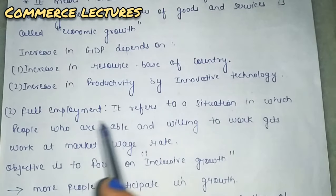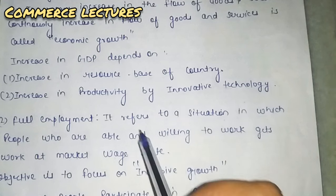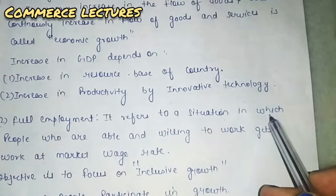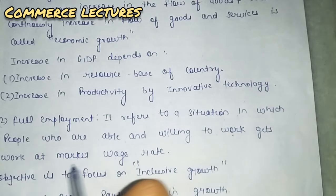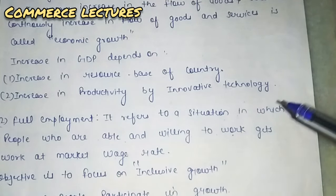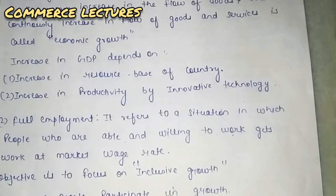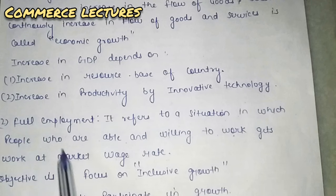The second long term goal is full employment — that people get employment. It refers to a situation in which people are able and willing to work and get work at the market wage rate. Both conditions are fulfilled: they are getting work and wages. This situation is called full employment.